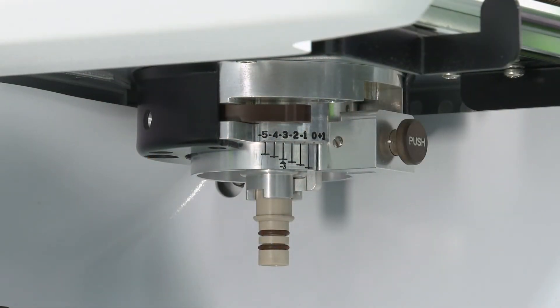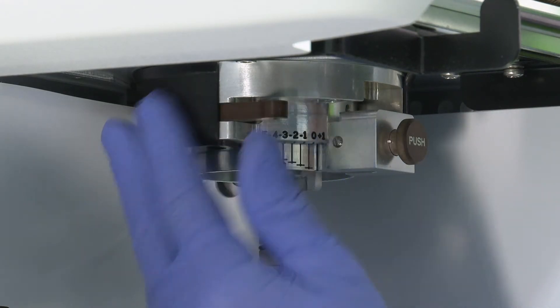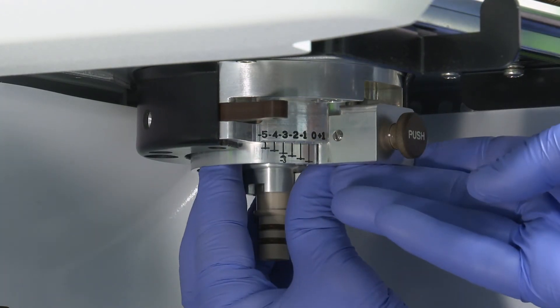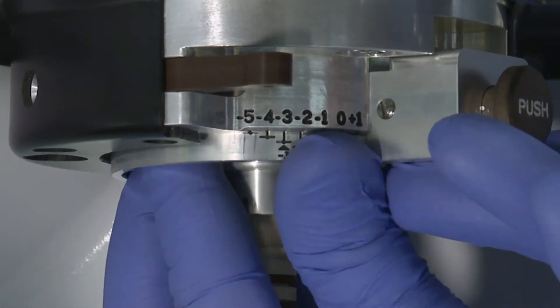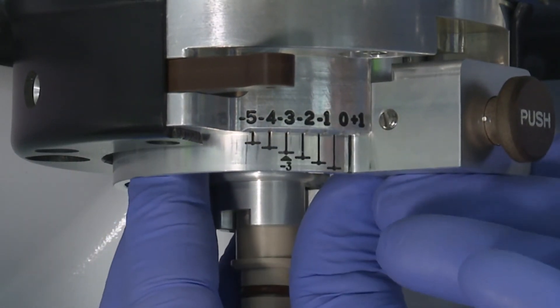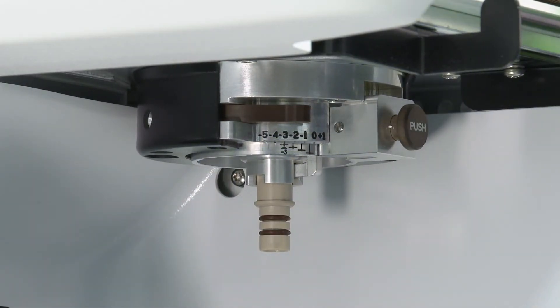To adjust the torch height, pull the torch height locking lever out and then adjust the height so that the horizontal line for the desired position is flush with the mount. Push the torch height locking lever inward to lock the position.